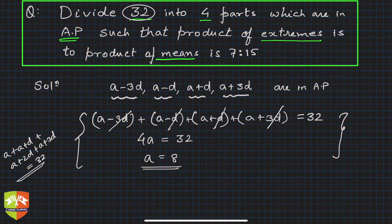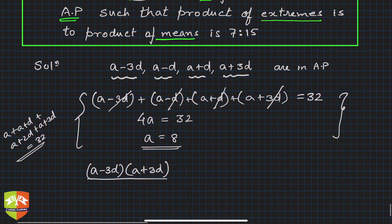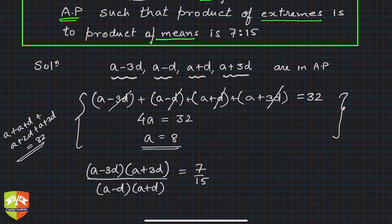Let's use the next property: product of extremes is to product of means. The product of extremes over product of means equals 7 upon 15.